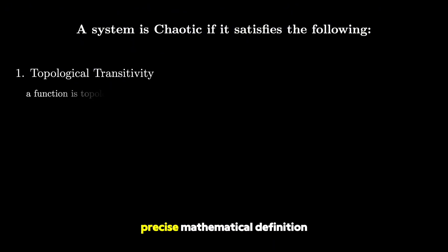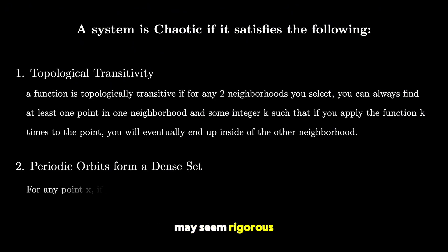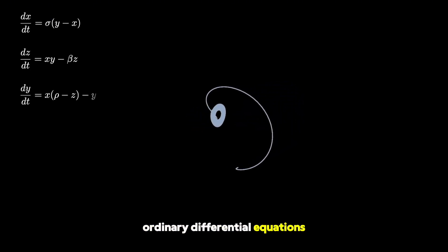Okay, so that's the precise mathematical definition of chaos. And although it may seem rigorous and abstract, it turns out that there are examples of chaotic systems everywhere. One of the most famous equations is the Lorenz attractor. It was first studied by the mathematician and meteorologist Edward Lorenz, as he was attempting to model atmospheric convection. What he discovered were three ordinary differential equations that have various chaotic solutions.